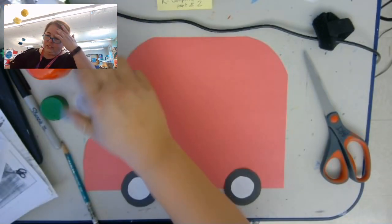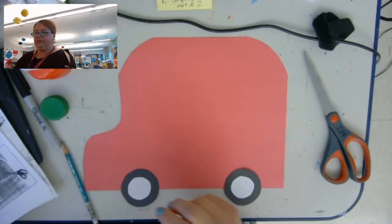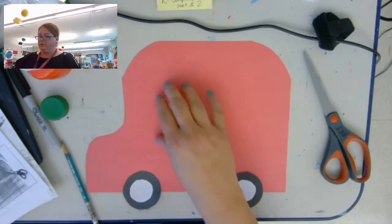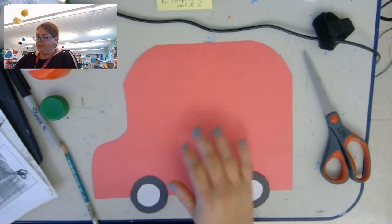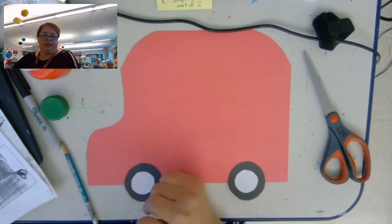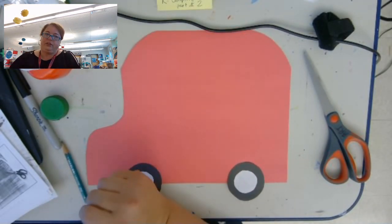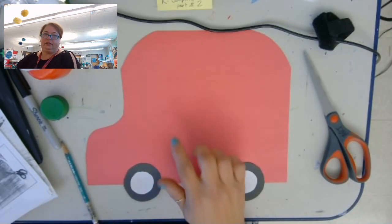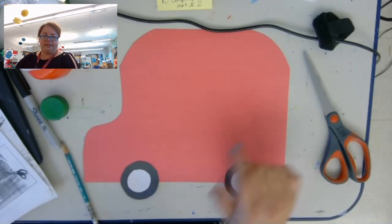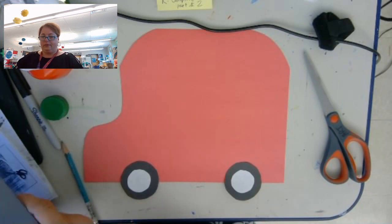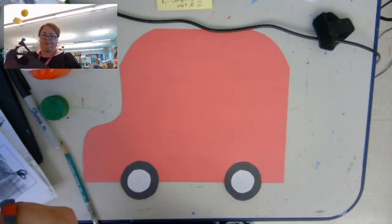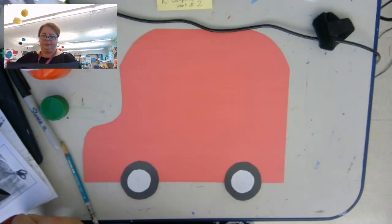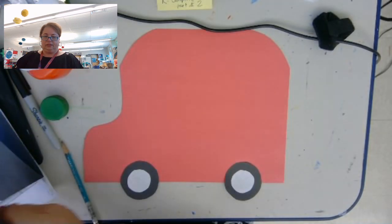You have two options for the windows. I'm going to make eight windows, four on the bottom and four on the top. I'm going to use black paper, like the windows are tinted. But if you wanted to, you could use white paper and then you could draw some people inside the bus. So I'm going to leave it up to you how you want to make your windows.